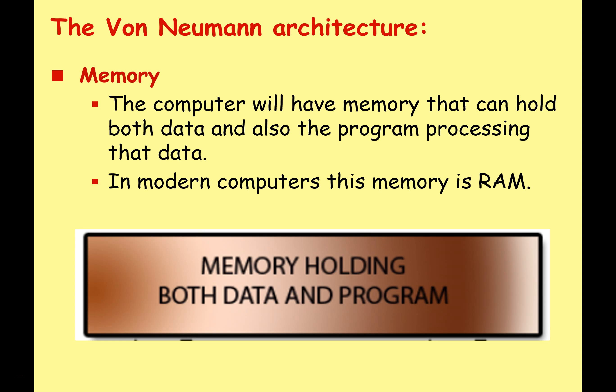The computer will have memory that can hold both data and also the program processing that data. So you've got the data and the software — the data and the instructions — both held in the same memory unit. In a modern computer, this is what we call RAM, the random access memory. For von Neumann architecture, it's just called the memory unit. Both data and the program are held together in the same memory unit — that's the key idea.